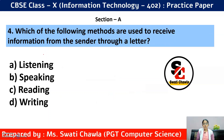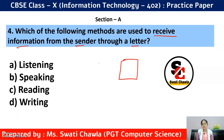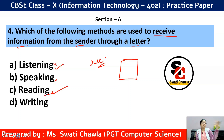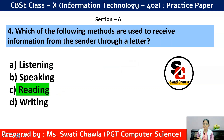Question 4: Which method is used to receive information from the sender through a letter? If the sender has sent a letter, I am the receiver. I won't be listening since nothing is spoken. I won't be speaking either. Writing is being done by the sender. So the correct answer is option C — Reading. If the sender has sent a letter, the receiver reads that letter.